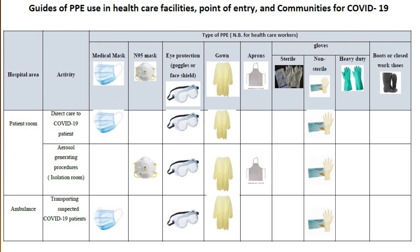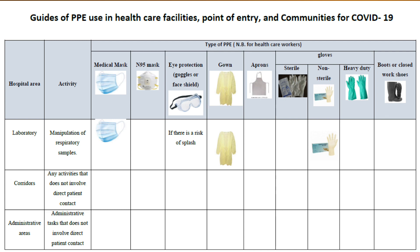For those with the patient in the ambulance, we are going to use the surgical mask, goggles, isolation gown, and non-sterile gloves. For laboratory personnel, we need the surgical mask, isolation gown, and non-sterile gloves. If splashes are expected, we also have to use the goggles.